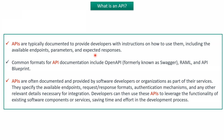APIs are typically documented to provide developers with instructions on how to use them, including the available endpoints, parameters, and expected responses. Common formats for API documentation include OpenAPI (currently known as Swagger), RAML, and API Blueprint. APIs are often documented and provided by software developers or organizations as part of their services, specifying available endpoints, request format, response format, authentication mechanisms, and any other relevant details necessary for integration.